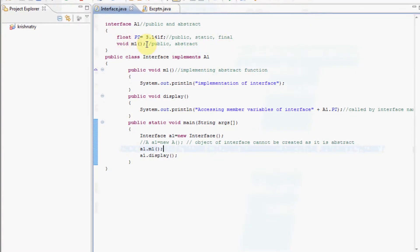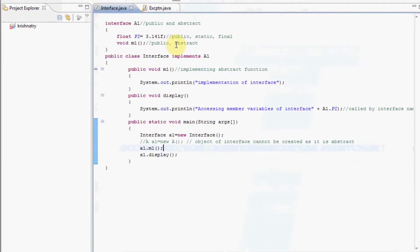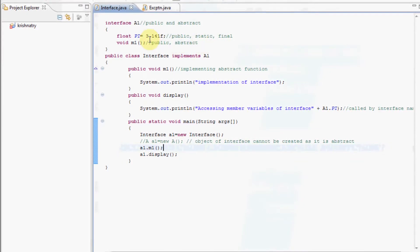Void m1 is a member method. It is public and abstract. Since it is abstract, its body is not defined here.